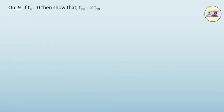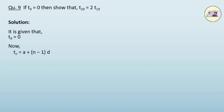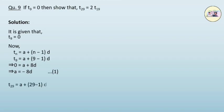Question 9. If the 9th term of an AP is 0, then show that the 29th term is twice the 19th term. Solution. It is given that t(9) = 0. Using t(n) = a + (n−1)d: t(9) = a + 8d = 0, therefore a = −8d. This is equation 1. Then t(29) = a + 28d = −8d + 28d = 20d.